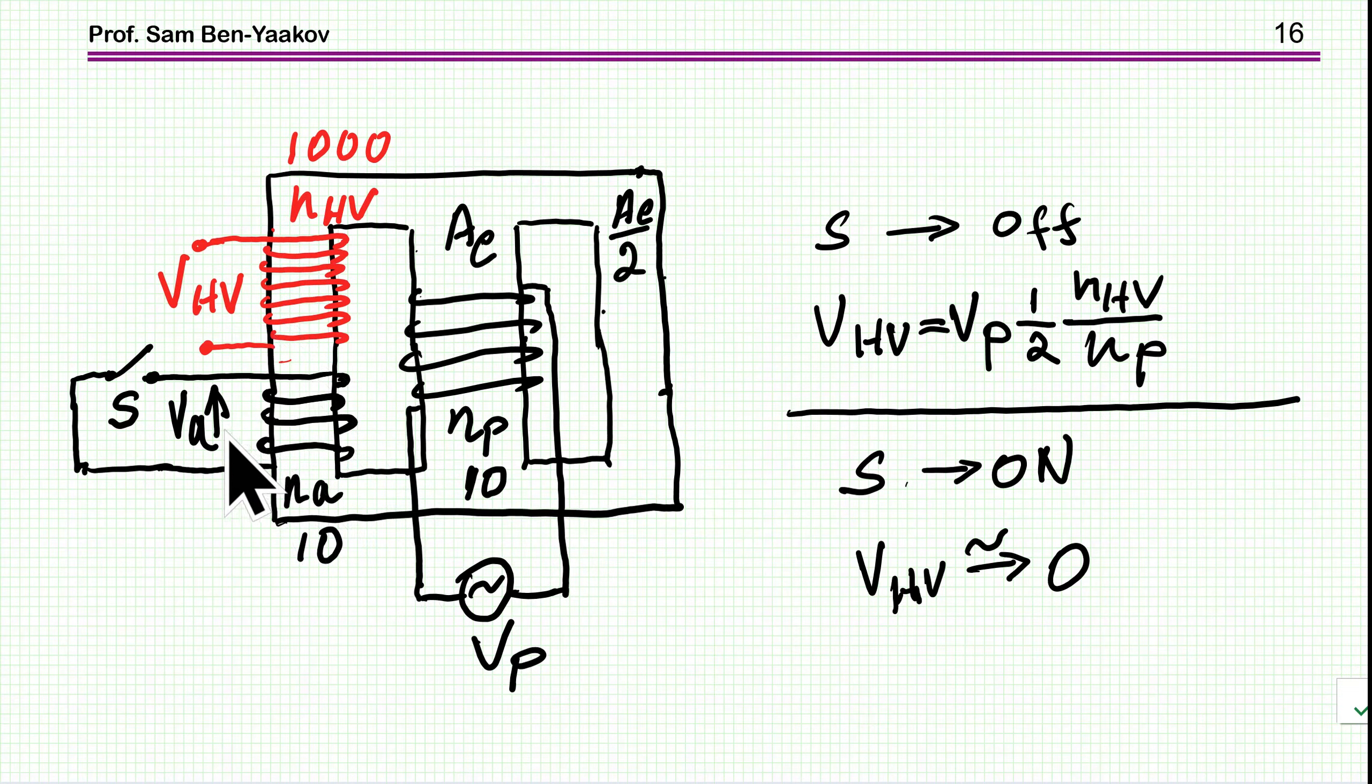And then we have 1,000 turns for this winding, which I call a high voltage. So it's a ratio of 1 to 100. So in open circuit, you'd expect that the voltage here will be 100 because of 1,000 divided by 10. And then divided by 2 because of the area. So it'll be half. So it'll be like 500 times the input voltage. The voltage here will be like the input voltage in the case of 10 and 10 turns.